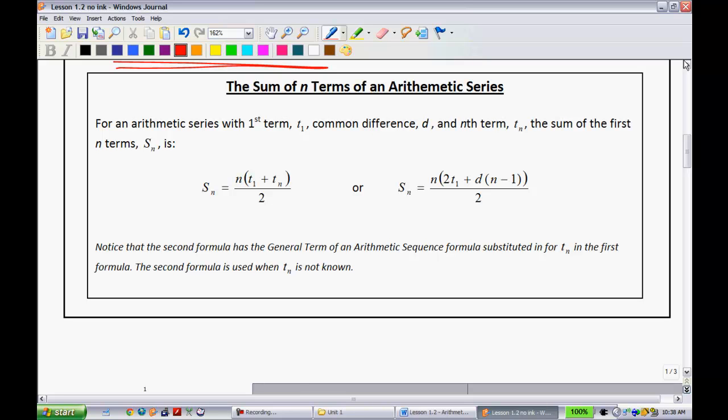So, there's two of these, and I'll explain why there's two of these. For an arithmetic series with first term t1, common difference d, and the nth term t sub n, the sum of the first n terms, s sub n, is calculated in this way. To get the sum of the n amount of terms, we take however many terms we have. So, let's say we have 10 terms, we add the first term, and then this right here, you might want to make note of this, this essentially represents the last term.